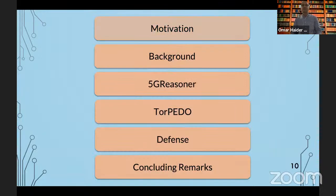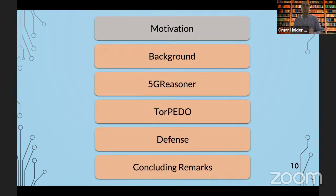Now that I've motivated that cellular network attacks are important and do happen in real life, before moving on, I'd like to talk a little about the background. After the background, I'm going to talk about 5G Reasoner, which is an analysis approach for analyzing cellular network protocol specifications. Then we'll talk about Torpedo, which is an attack that uses side-channel information to geographically locate a user from their phone number only. And then we'll talk a little about defense and finally conclude with some remarks.